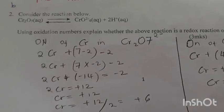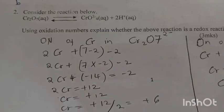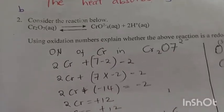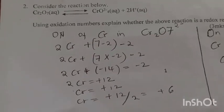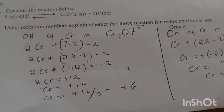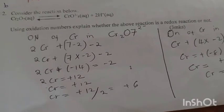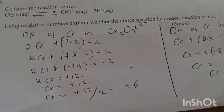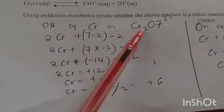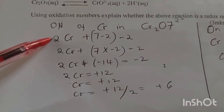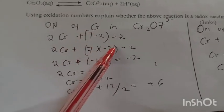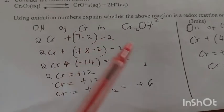Consider the reaction below. Dichromate Cr2O7 decomposes to give chromium ions and hydrogen ions. Use oxidation number to explain whether the above reaction is a reduction reaction or not.